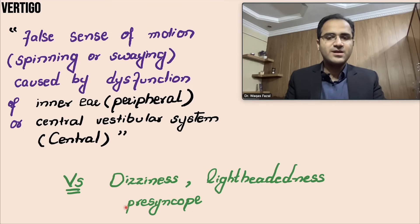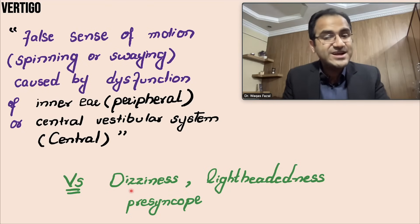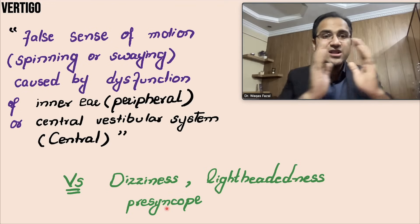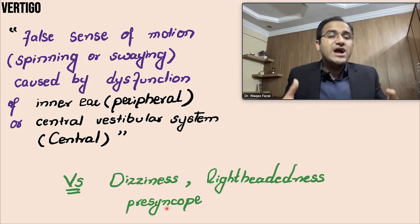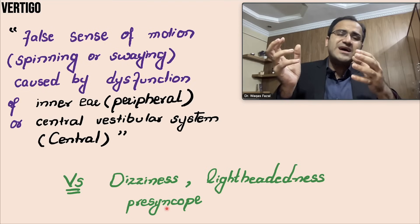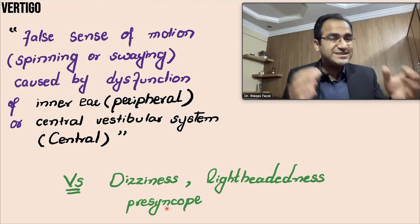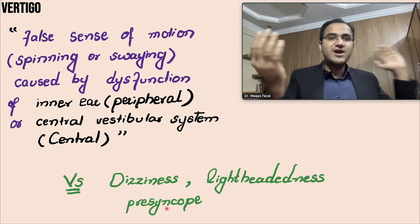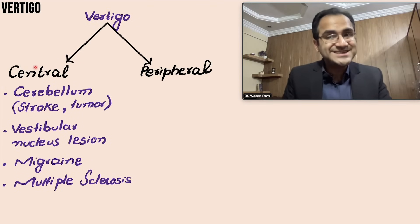In some cases the ear is functioning normally but the brain is perceiving wrong signals and thinks the surrounding is moving — that is called central vertigo. There are certain terms that must not be confused with vertigo. Patients may say they are feeling dizzy, lightheaded, or presyncope. In dizziness or presyncope there is orthostatic hypotension, the blood pressure drops, and the patient may briefly lose consciousness — that is different from vertigo.